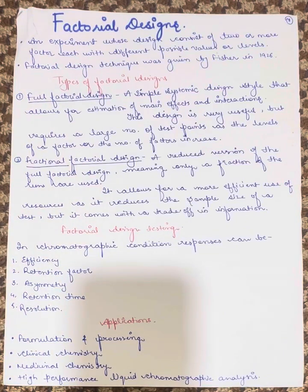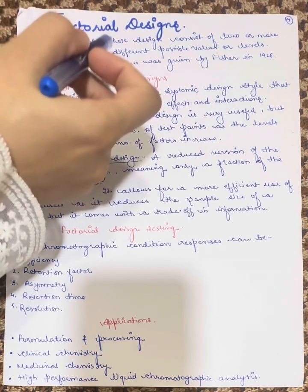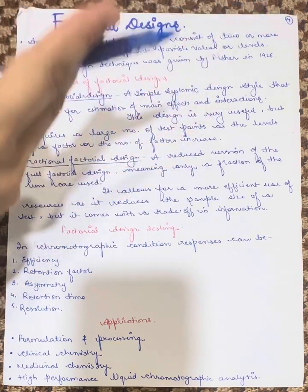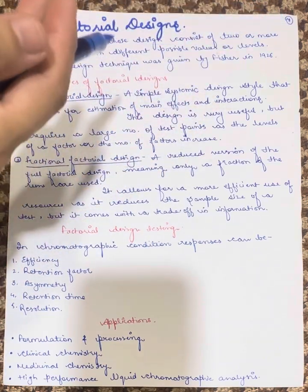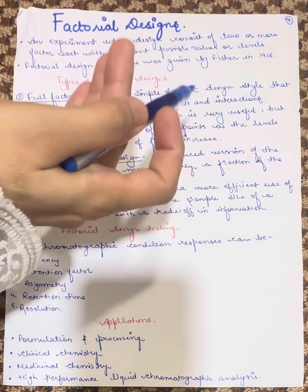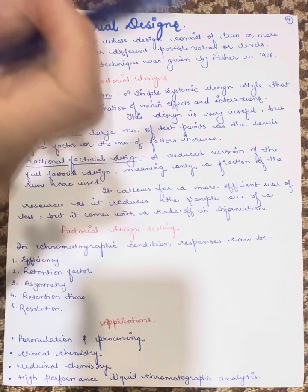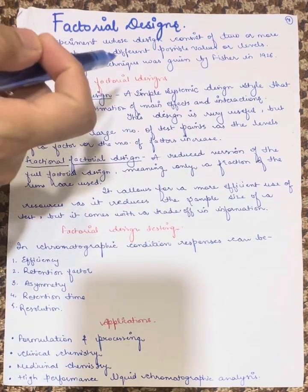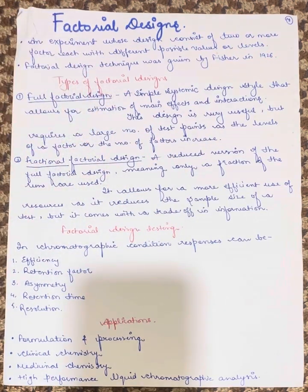In this video we are going to study about the factorial designs. It is an experiment whose design consists of two or more factors, each with different possible values or levels. The factorial design technique was given by Fisher in 1926.